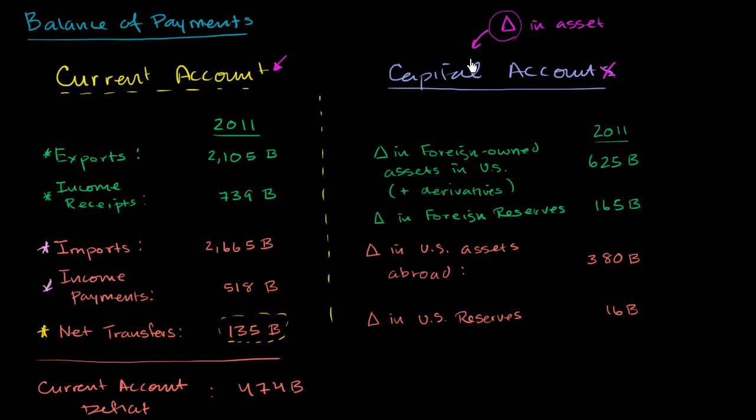This little triangle right over here is the Greek letter delta, just shorthand for 'change in.' Let's focus first on the inflows. When you're talking about change in assets, these would essentially be someone outside the US buying assets inside the US from someone that was not foreign. For example, if I am an American home builder, I build a home in the US and then I sell it for a million dollars to a Mexican national — maybe for their vacation home — that means there's been an increase in foreign ownership of US assets, and this number would be increased by a million dollars.